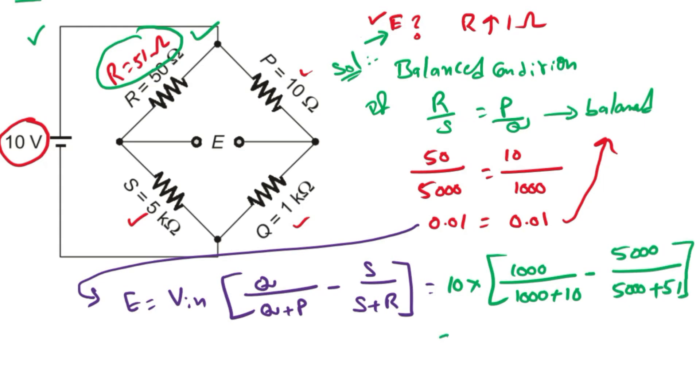By solving this, you will get 0.00196 volts, because it is output voltage, that's why units is volts.